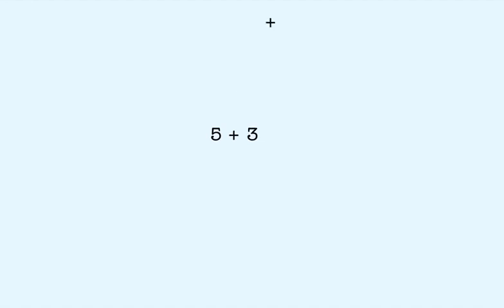Let's look at a different example: 5 plus 3 plus 4. 5 plus 3 plus 4 is not multiplication. Multiplication is only for repeated addition of the same number. Since 5, 3, and 4 are all different numbers, we cannot rewrite this addition sentence as a multiplication sentence.